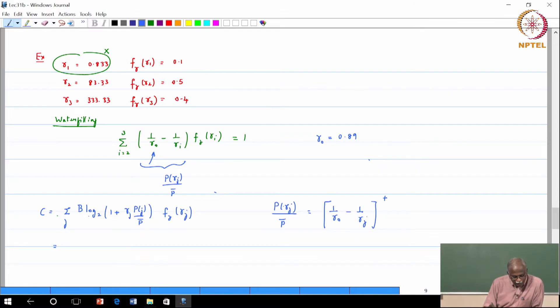So this will simplify to summation i equal to 2 to 3 B times logarithm base 2. If you notice when I substitute for this equation, there will be a minus 1 which will come. So basically the 1 and minus 1 will cancel leaving us with the following expression: gamma J gamma i divided by gamma 0 into F gamma of gamma i.